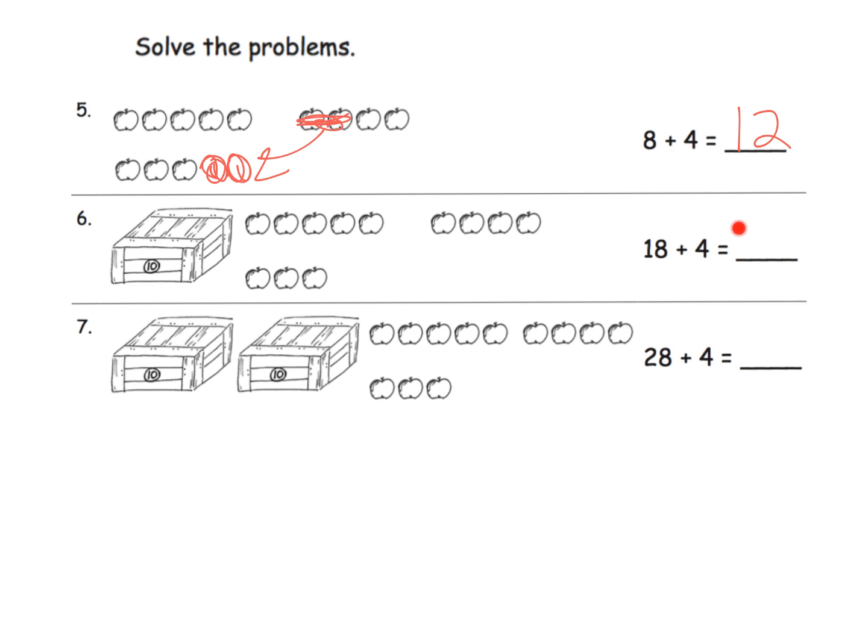So 8 plus 4 is equal to 12. And then the idea is, well, what are we going to do for 18 plus 4? Well 18, I love this, they've decomposed 18 for us to be 10 plus 8, plus 8 plus 4. So we know that 8 plus 4 is 12, and then add another 10, that's going to give us 22.